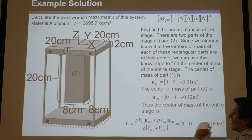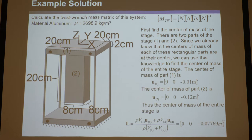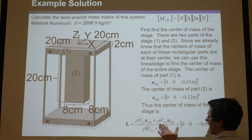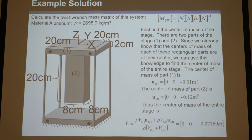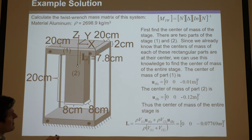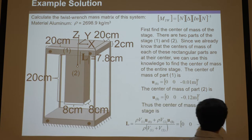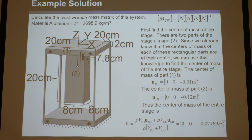If you plug in all these things, you'll notice the rhos cancel, and you get −0.07769 meters from the top down to the center of mass. So now we know the mass of the whole stage and the center of mass of the stage. The magnitude is essentially 7.8 centimeters — it's actually 7.769 centimeters, but we're going to round it to 7.8 centimeters for simplification.